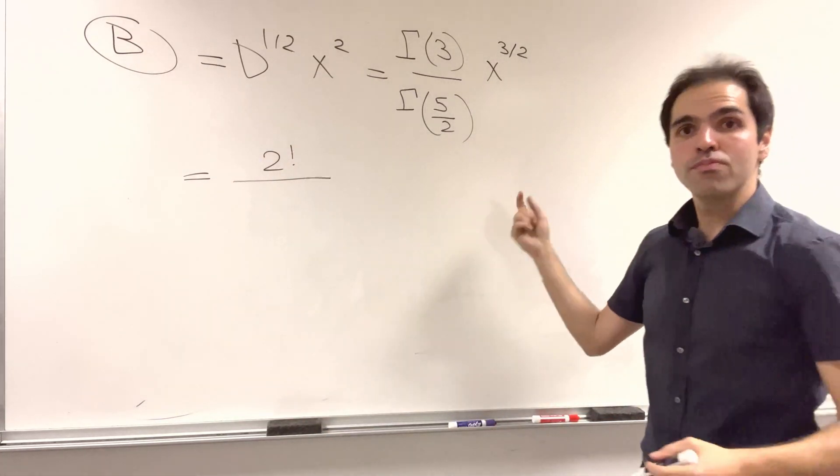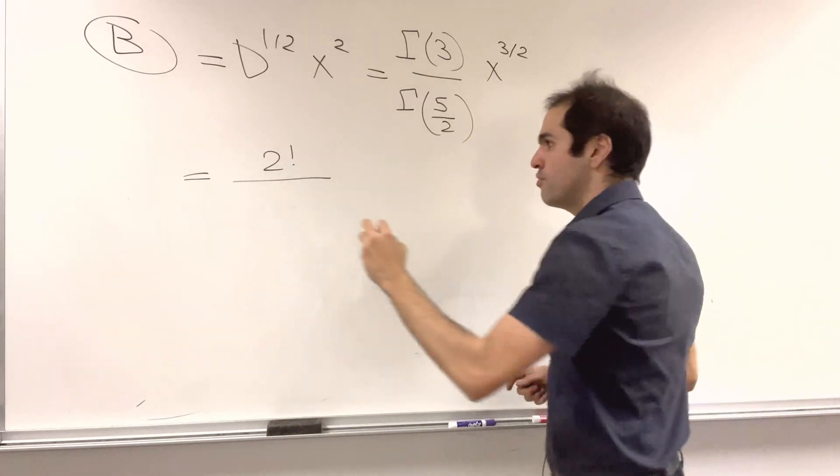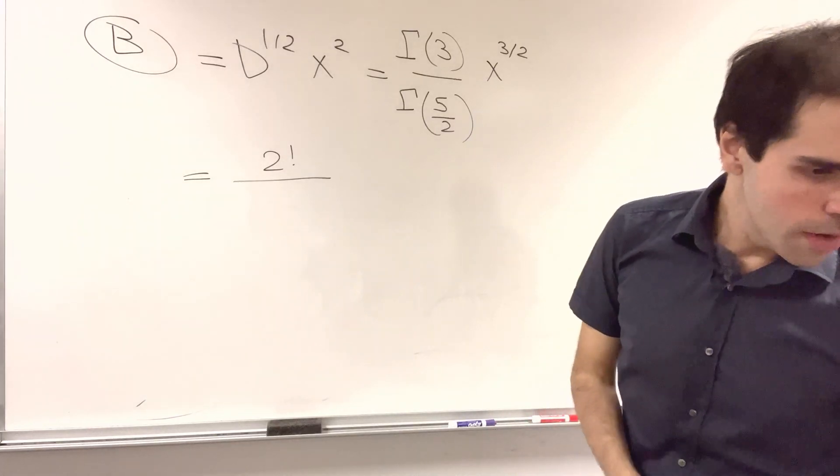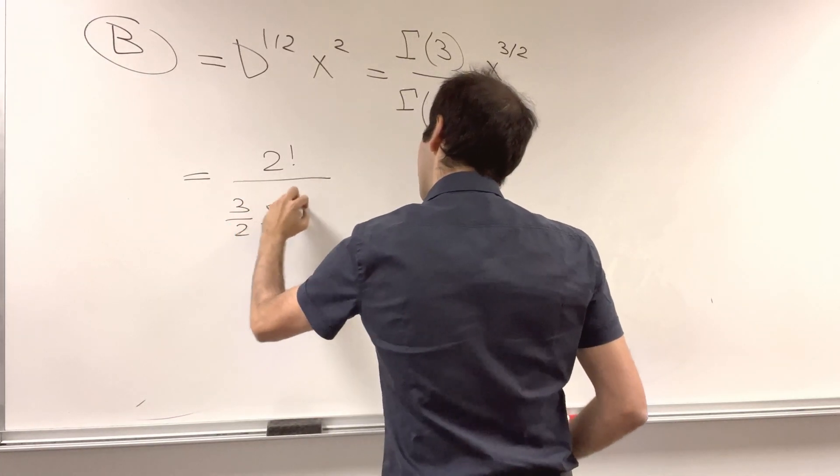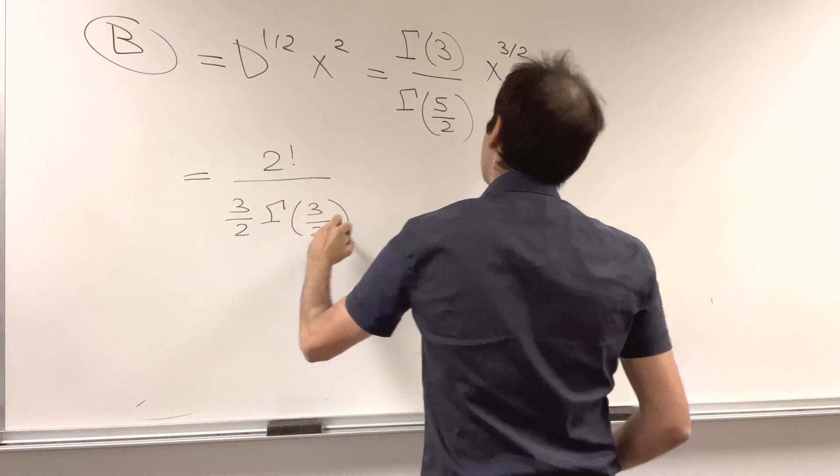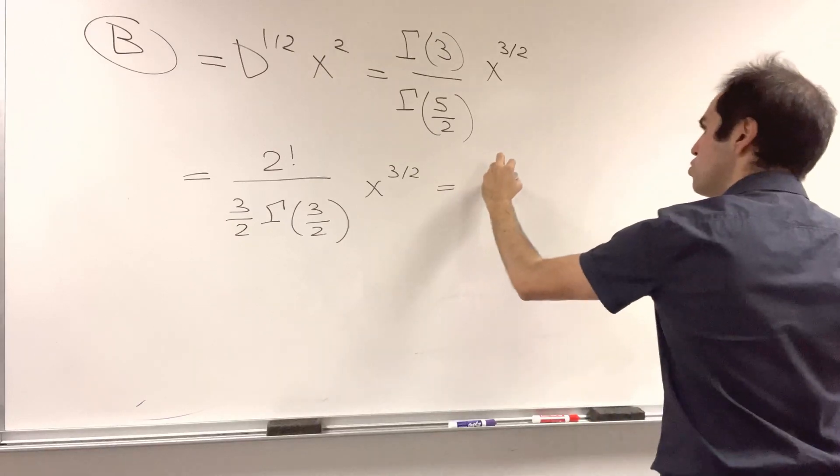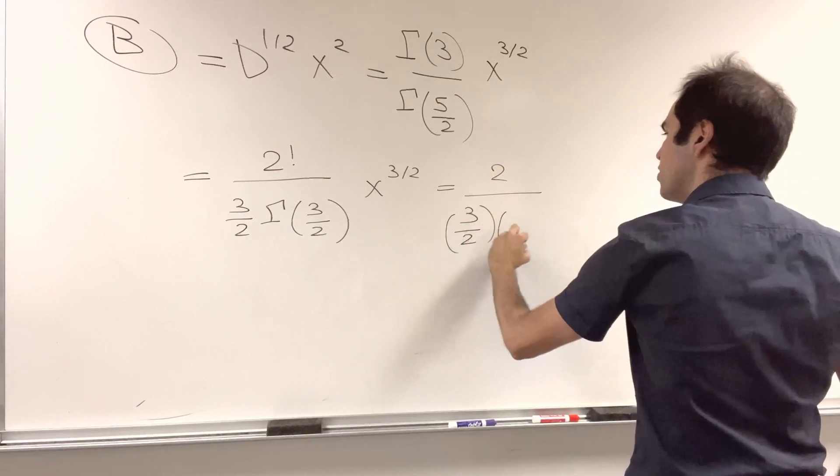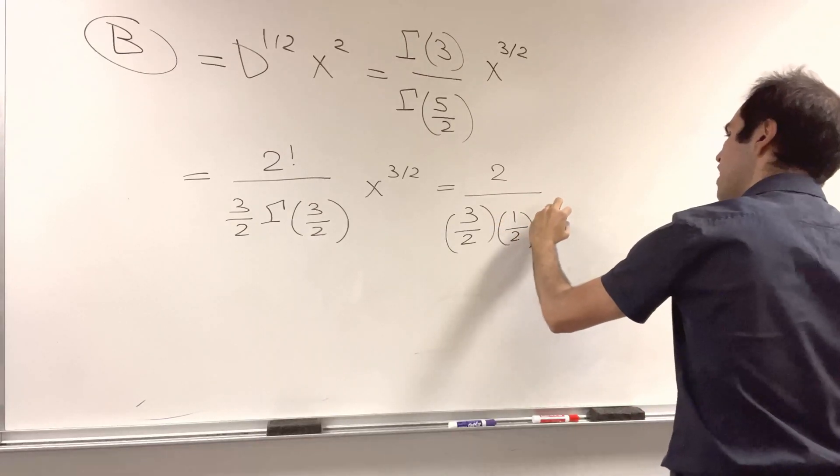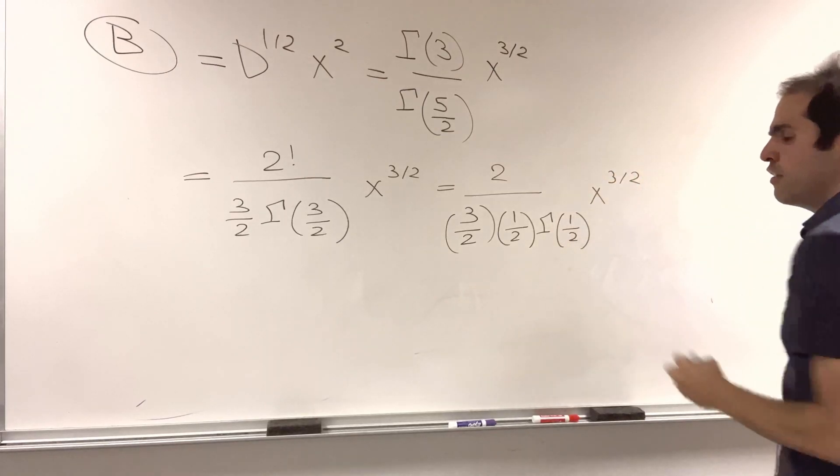Gamma of 5 halves, here it's easier to apply the multiplicative rule. So I think it's just 3/2 times gamma of 3/2 times x to the 3/2. Well this is 2, and then we have 3/2, well we can apply this once more. So 1/2 gamma to 1/2 of x to the 3/2.